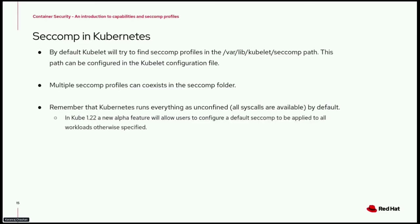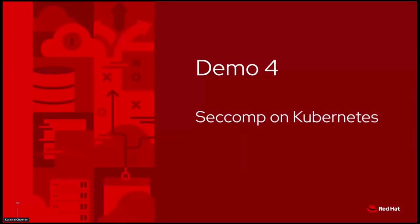Now we have seen how capabilities work on Kubernetes, so let's see how to use seccomp profiles in Kubernetes. By default, kubelet looks for seccomp profiles in /var/lib/kubelet/seccomp, but this path can be configured in the kubelet configuration file. Kubernetes runs everything as unconfined by default, and in Kubernetes 1.22 a new alpha feature will allow users to configure a default seccomp profile.